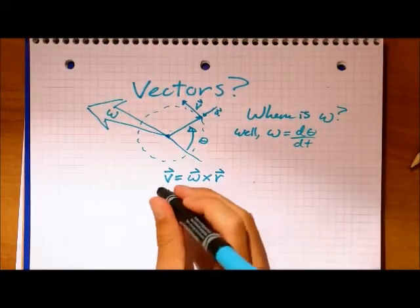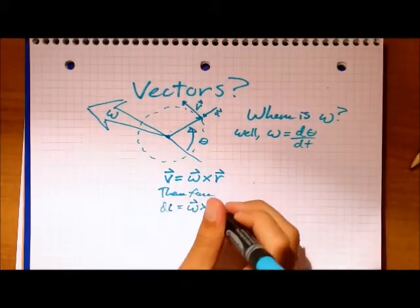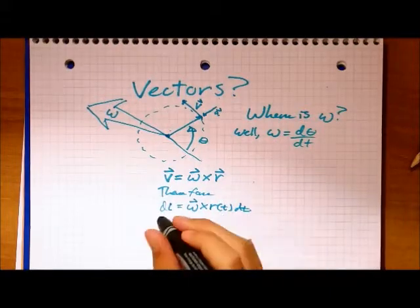Therefore, our cross product is equal to the derivative of our object's position, which can be rewritten using the definition of the derivative.